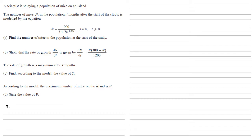A scientist is studying a population of mice on an island. The number of mice n in the population t months after the start of the study is modelled by the equation n equals 900 over 3 plus 7e to the minus 0.5t. We want to find the number of mice in the population at the start of the study.